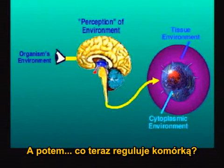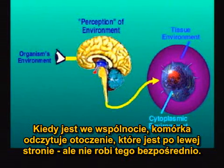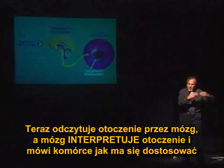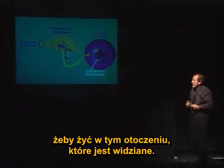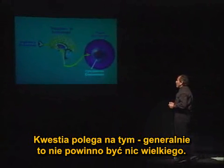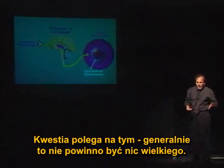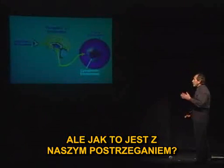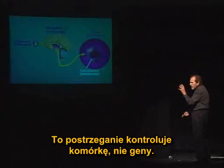So what regulates the cell when it's in a community? The cell reads the environment, which is the left side, but it doesn't read it directly. It now reads the environment through the brain, and the brain interprets the environment and then tells the cell what adjustment it should do to live in that environment. The issue is that perception is controlling the cell, not the genes.